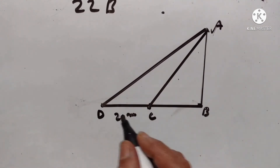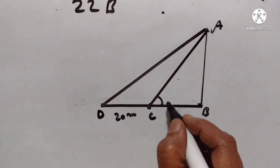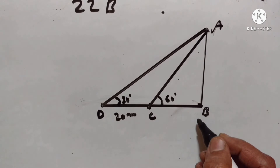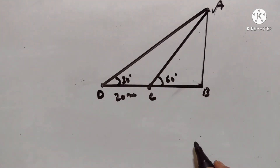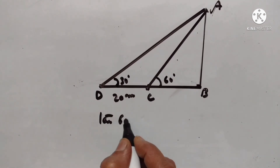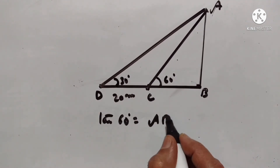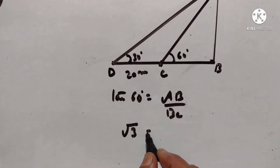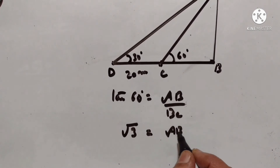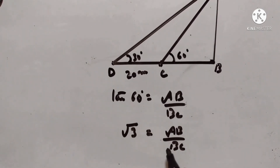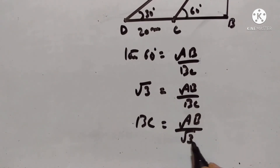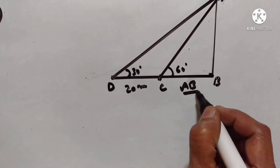The elevation changes from 60 degrees to 30 degrees and we have to find the height of the tree. Tan 60 is equal to AB upon BC. Tan 60 is equal to square root of 3, so BC is equal to AB upon square root of 3.